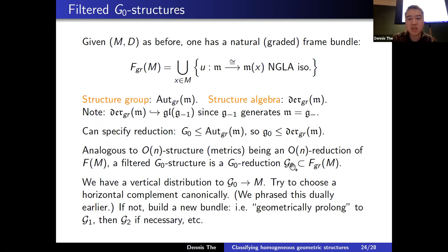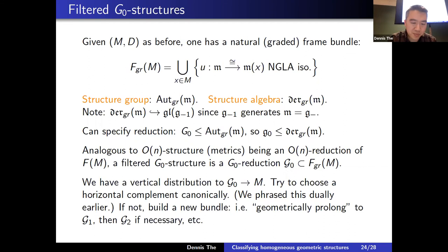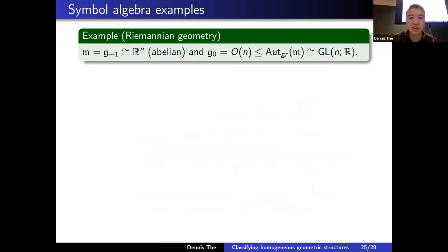Given such a reduction, we have vertical and horizontal distributions. Analogous to before, we try to choose a horizontal complement canonically. If there is ambiguity, we build a new bundle — geometric prolongation producing G₁, then G₂ if necessary, a tower of bundles. Examples of symbol algebras: for Riemannian geometry, m is just g₋₁ — abelian — and G₀ is O(m). For GL(m), one has graded automorphisms just being GL(m).